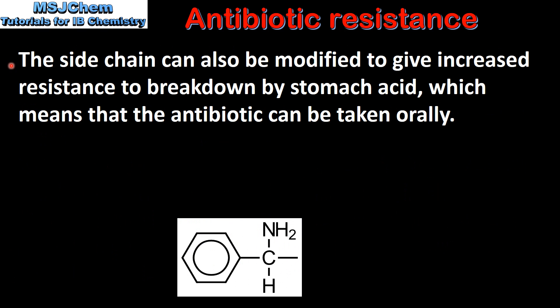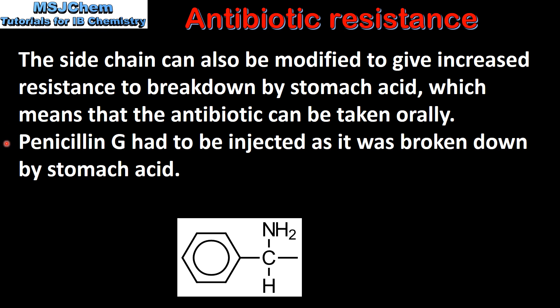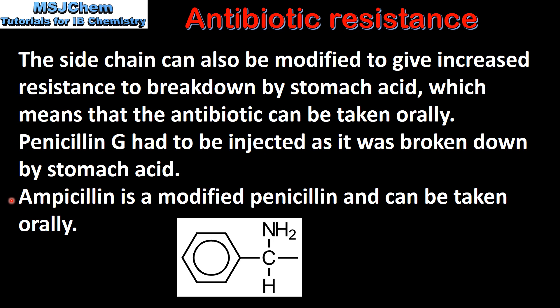The side chain can also be modified to give increased resistance to breakdown by stomach acid, which means that the antibiotic can be taken orally. The original penicillin, which was penicillin G, had to be injected as it was broken down by stomach acid. Ampicillin is a modified penicillin and can be taken orally. Here we can see the side chain of ampicillin. This side chain gives increased resistance to breakdown by stomach acid, which means that ampicillin can be taken orally.